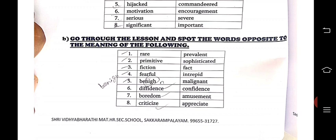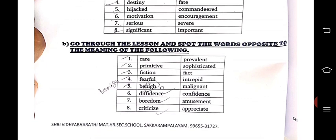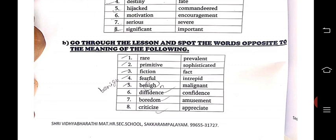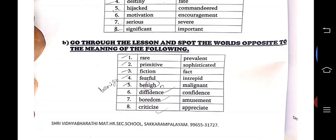Now we are going to see the opposites — antonyms. Rare — prevalent. Primitive means out of date or stale; its opposite is sophisticated. Fiction — fact. Fearful — intrepid. Benign — malignant; malignant means fearless. Diffidence — confidence. Boredom — amusement; amusement is something like enjoyment. Criticized — appreciated. These are the antonyms.